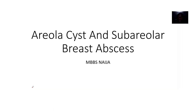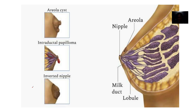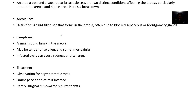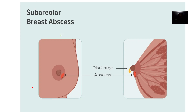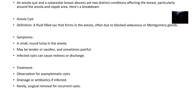We'll be discussing two conditions: the first one is the areola cyst, which is a cyst around the area of the breast, and the other one is the sub-areola breast abscess — within the area of the breast around the areola. The areola cyst and sub-areola breast abscess are actually distinct conditions that affect the breast.